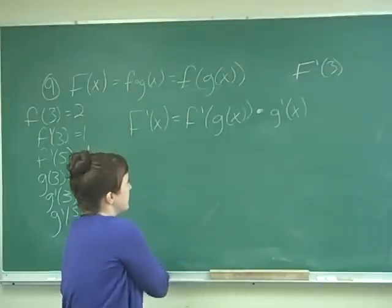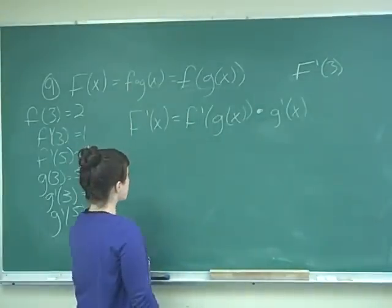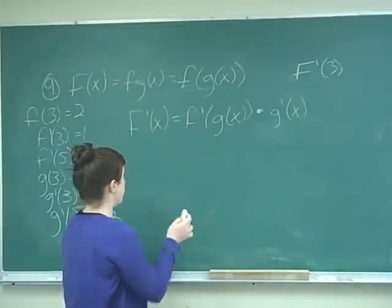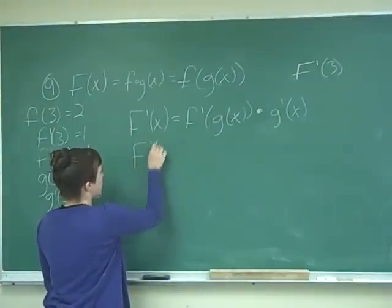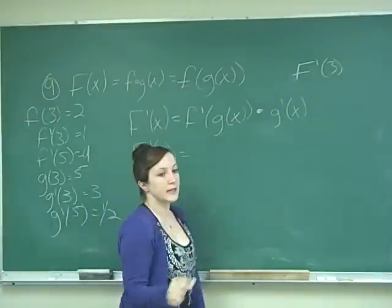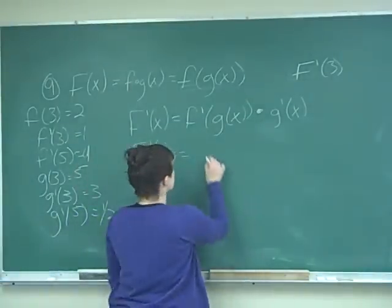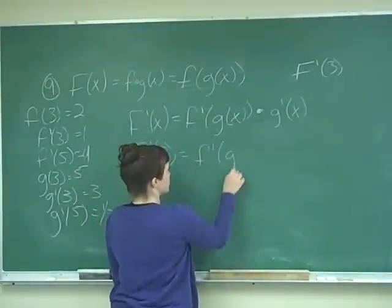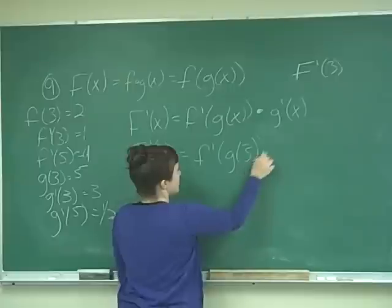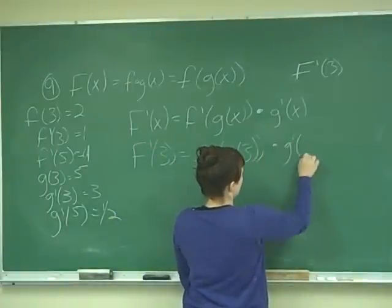And so that is our chain rule, and so now it wants to know F prime of 3. So we've got big F prime of 3 is equal to, and any time we see an x, we go and fill it with a 3. So that gives me f prime of g of 3 times g prime of 3.